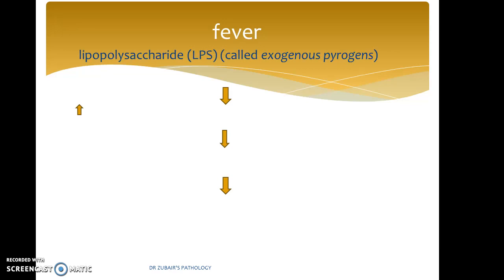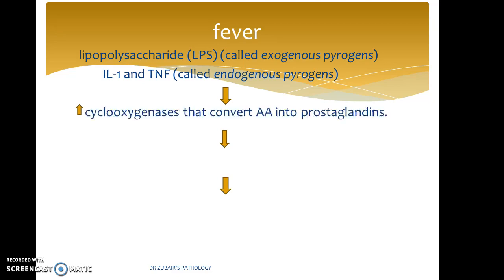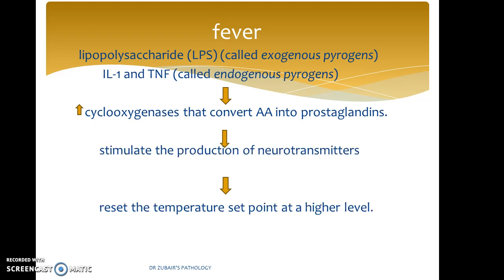Whenever there is fever, it is caused by lipopolysaccharides called exogenous pyrogens, and interleukin-1 and tumor necrosis factor called endogenous pyrogens. These lead to an increase in cyclooxygenase, which converts arachidonic acid into prostaglandins, which stimulate the production of neurotransmitters and reset the temperature to a higher level. That is why we notice a high temperature during fever.